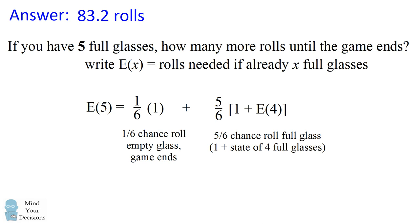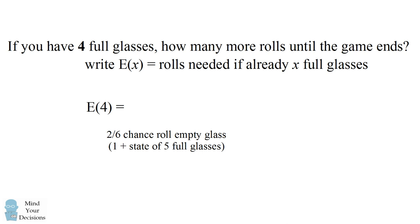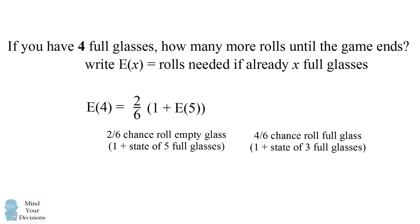Now how many rolls will it take when we have 4 full glasses? We can write a similar equation. With 4 full glasses, there's a 2/6 chance we roll one of the empty glasses, taking one turn to reach 5 full glasses. There's also a 4/6 chance we roll a full glass, drink it, and drop to 3 full glasses — taking one turn to reach that state.